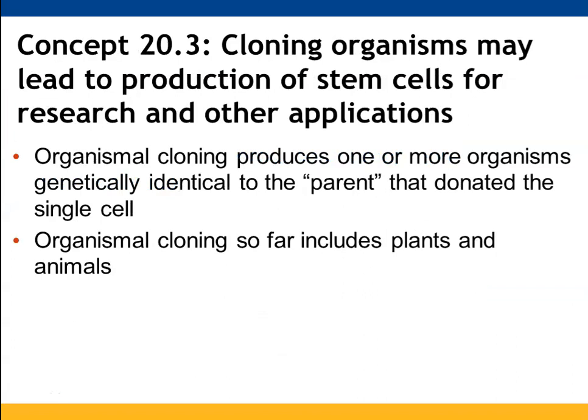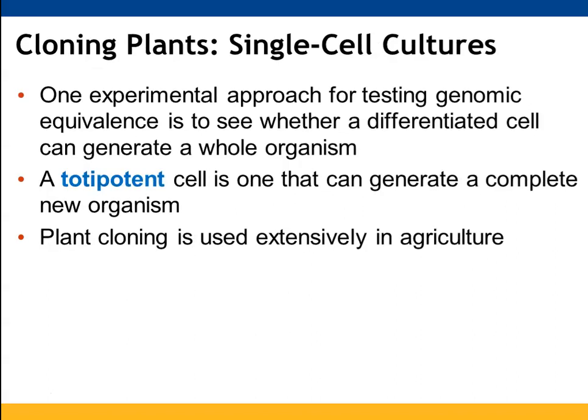Cloning organisms is one way to obtain stem cells. Cloning involves taking DNA from one organism and introducing it into another to make an identical copy of that organism's DNA and have it produce offspring. We've seen this with both plants and animals. A key question is how far back in differentiation we need to go — whether we can clone from a differentiated cell, a determined cell, or must go all the way back to a stem cell.